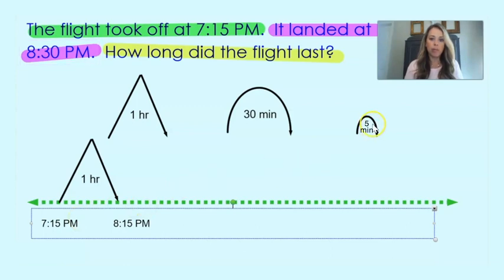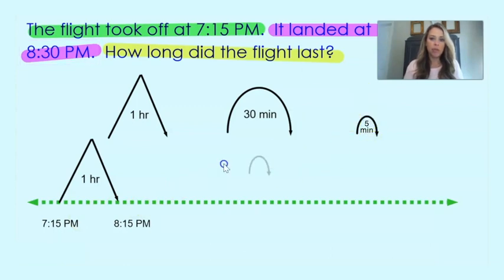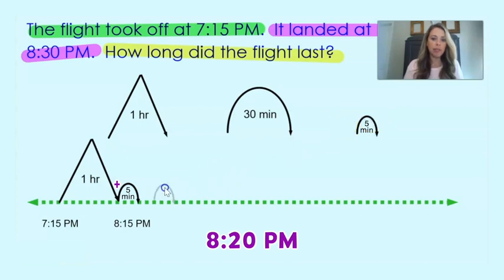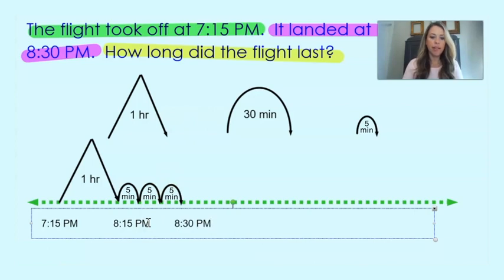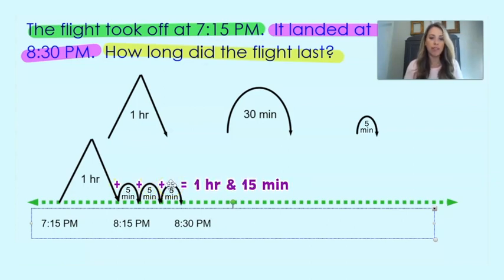Now I need to make it to 8:30pm because that's the end time, so I'm going to do a few more jumps — five minutes at a time. So 8:15pm plus 5 minutes is 8:20pm, plus 5 more minutes is 8:25pm, and then 5 more minutes gets us to 8:30pm. So I count up my jumps: 1 hour plus 5 minutes, 5 minutes, and 5 more minutes, for a total of 1 hour and 15 minutes.